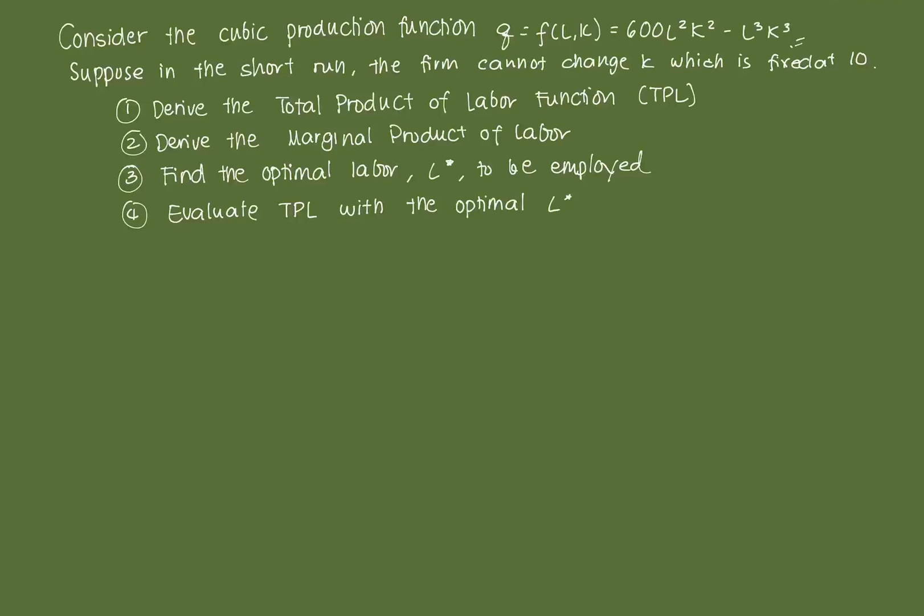As we said in the last video, in the short run, not all inputs can be changed due to the period's limitations. In this case, there is a fixed input, and that particular fixed input is capital. The firm cannot change the level of capital due to the shortness of the production run. As such, the only thing that it can choose to change to improve the technical efficiency of the production process is labor.